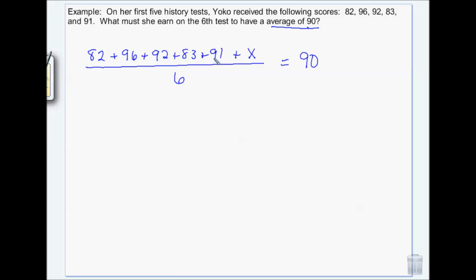So we're going to add up those together. And we're going to get four hundred and forty-four plus x over six is equal to ninety. Multiply both sides by six to cancel these out. So you get four hundred and forty-four plus x is equal to five hundred and forty. Subtract four hundred and forty-four from both sides. And that tells us that in order to get an A in the class, Yoko would have to get a ninety-six on her last test.